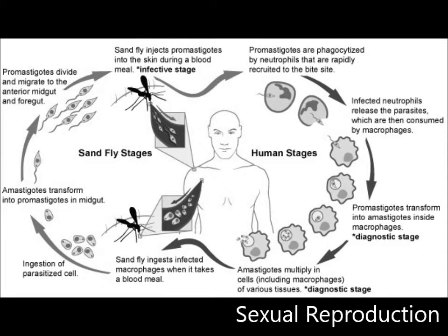The first stage in the life cycle is the infective stage, where the promastigotes — the beginning stage of a trypanosomatid — are injected into the skin during a blood meal. Later on, the promastigotes are eaten by neutrophils, or white blood cells. The promastigotes are now capable of developing within the macrophages, also known as white blood cells, making this the diagnostic stage.